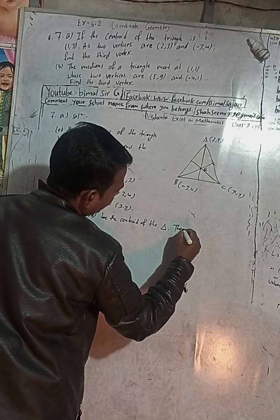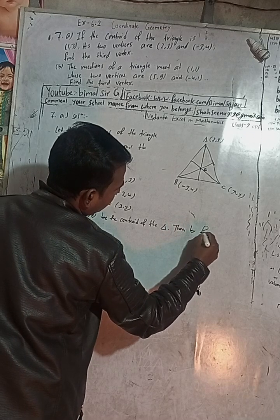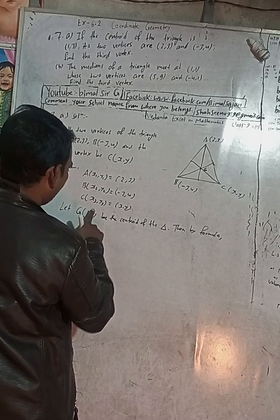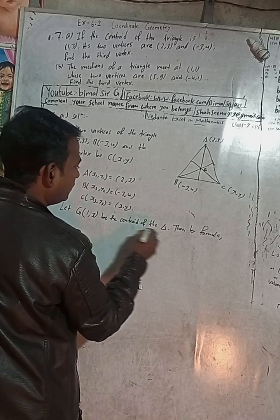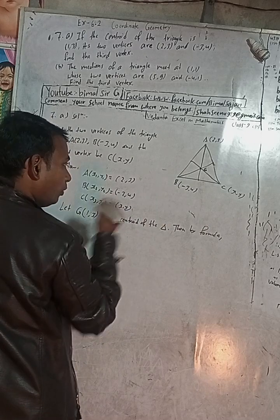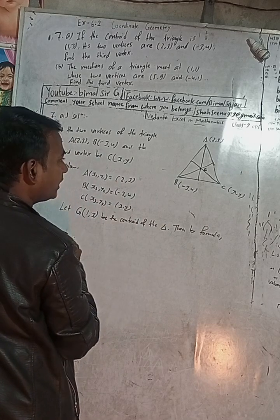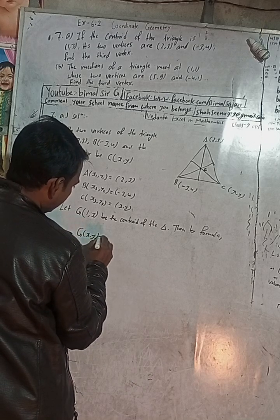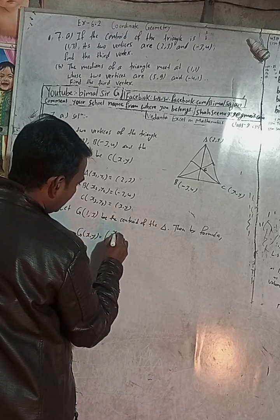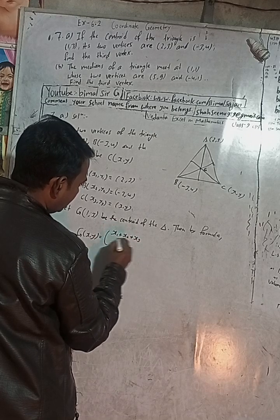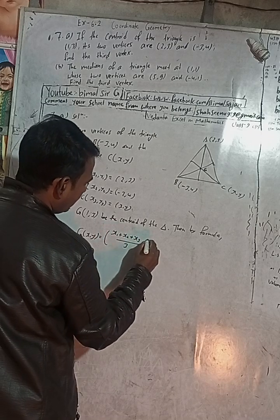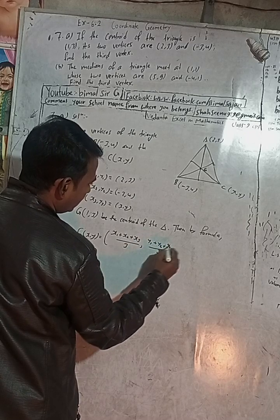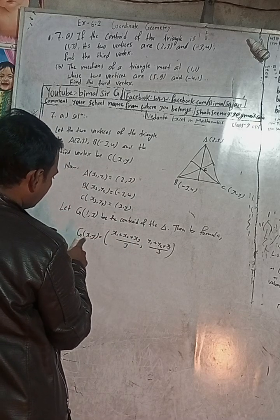Then by formula: if G is the centroid of the triangle, then by the centroid formula, G(x, y) = ((x₁ + x₂ + x₃)/3, (y₁ + y₂ + y₃)/3). This is the formula for the centroid. In place of G(x, y) we substitute (1, 3).